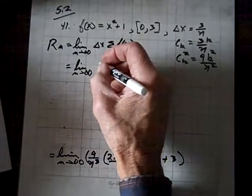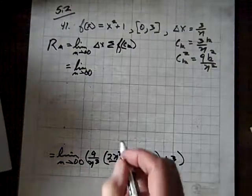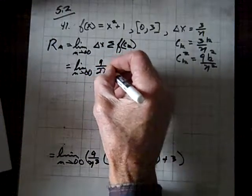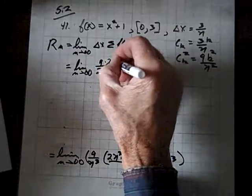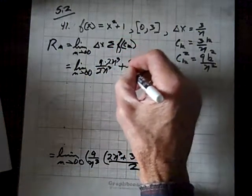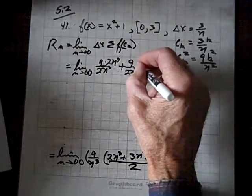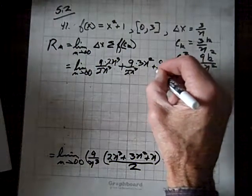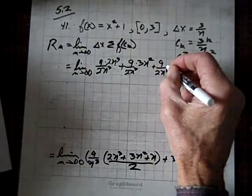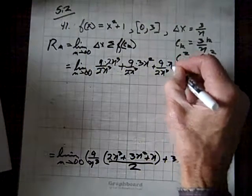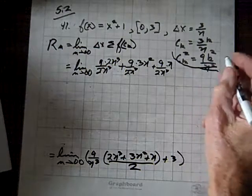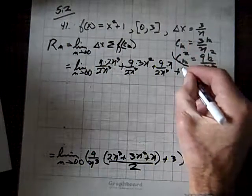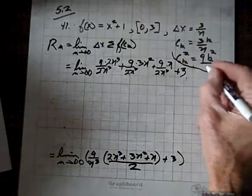So, what we now have is multiplying this 9 over n cubed times each term and dividing each term by 2. We have 9 over 2n cubed times 2n cubed plus 9 over 2n cubed times 3n squared plus 9 over 2n cubed times n. And still, oh boy, we have our friend here plus 3. And by the way, I have an n squared there.